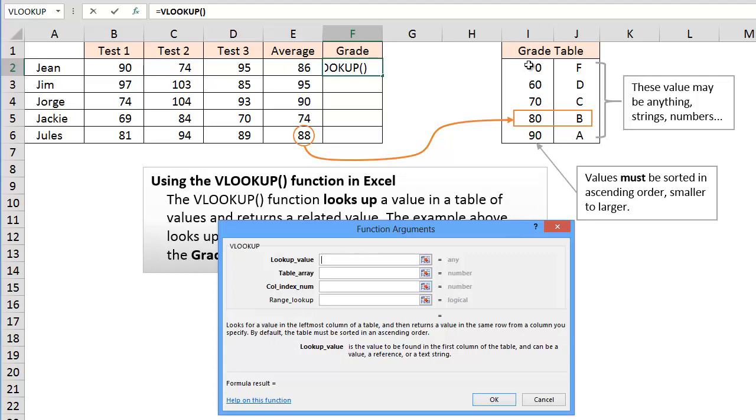It returns a value in the same row from a column you specify. So we are going to specify this second column here for the return value. They allow you to have many columns in a lookup table like this but we are just going to have two columns. The first column leftmost is where we are going to look for a match and then the second column is where we are going to return the value. Notice it says the table must be sorted in ascending order. That means that these numbers that we are looking up they have to be sorted smaller to larger.